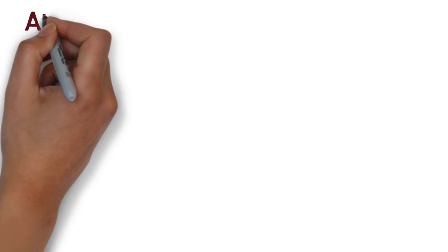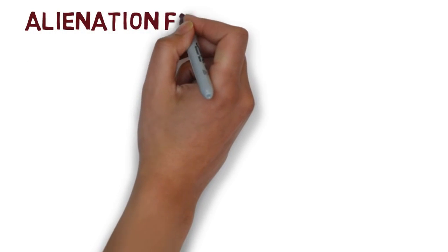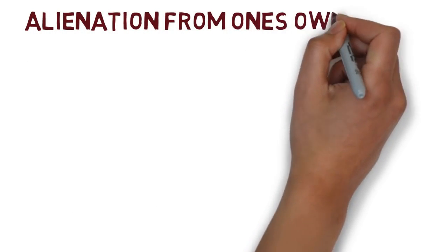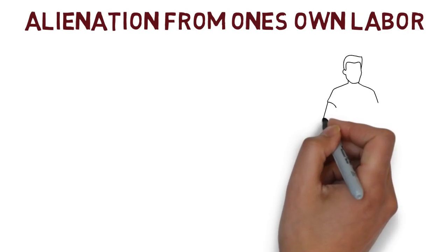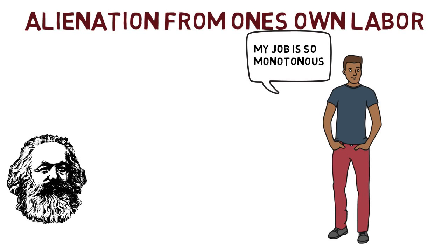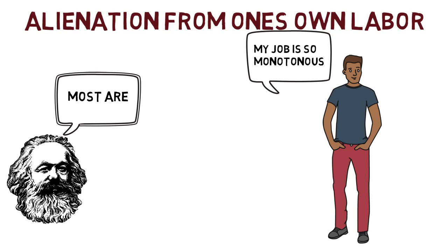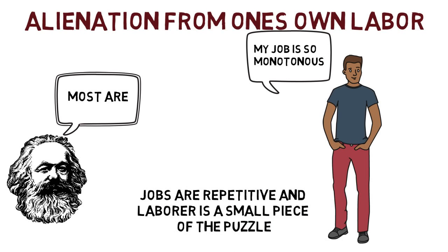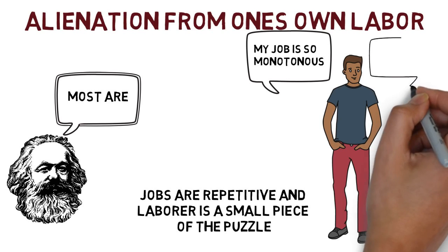The second type of alienation is alienation from one's own labor. Making products in a capitalist system puts many people in positions that are repetitive and laborers end up going through the motions. They have one highly specialized job in producing the whole product. The laborer does not give input into the purpose, design, distribution, and marketing of the product.